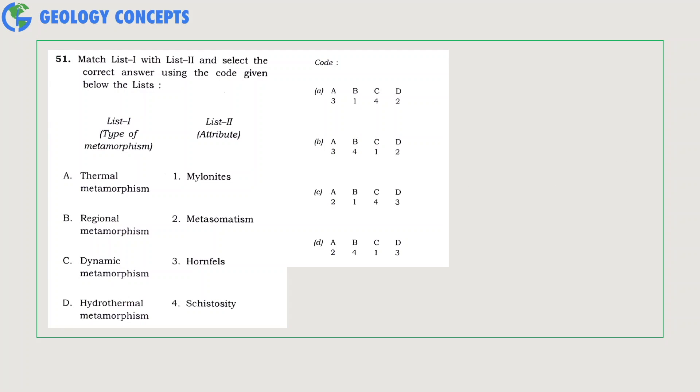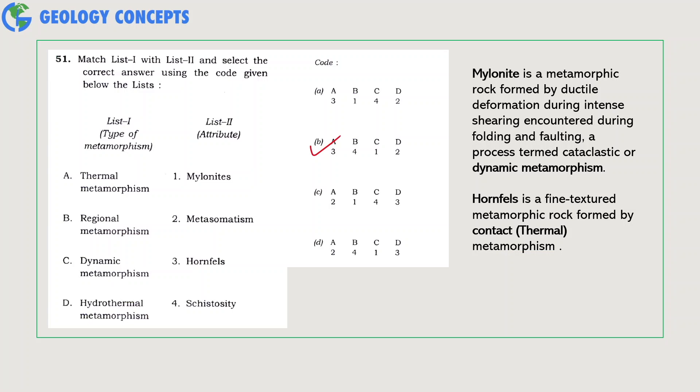The question asks us to match the type of metamorphism with the attributes or features associated with them. Mylonite is a metamorphic rock formed by ductile deformation during intense shearing encountered during folding and faulting, which is termed as cataclastic or dynamic metamorphism. So option C matches with option 1 from list 2. Hornfels is a fine-textured metamorphic rock formed by contact or thermal metamorphism. Hence, option A matches with option 3 from list 2. So option B will be the right combination and the right answer.